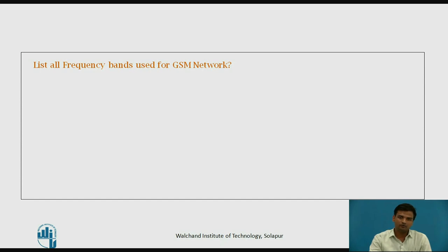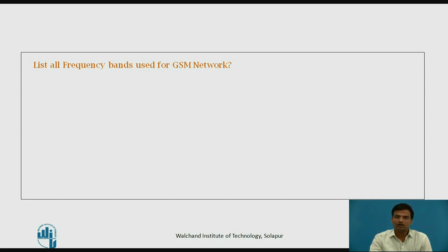GSM operates on the Mobile Communication Band 900 MHz and 1800 MHz in most parts of the world. In the US, GSM operates in the bands 850 MHz and 1900 MHz. The frequency band used for GSM in the US is different from the rest of the world.